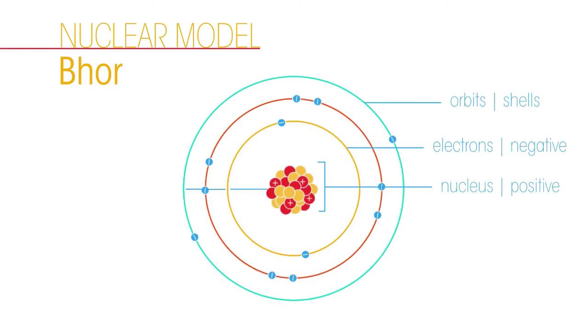So that's our current understanding of the atom. There is a positively charged nucleus with negatively charged electrons orbiting around it in specific shells.